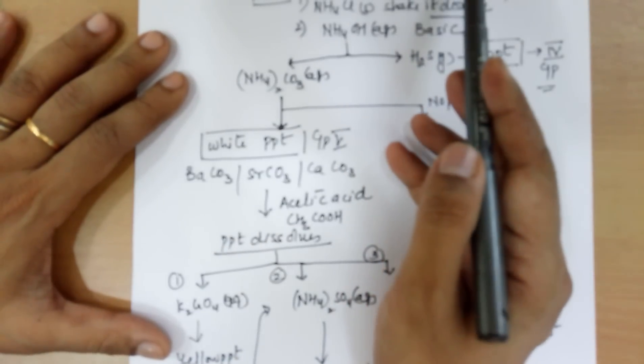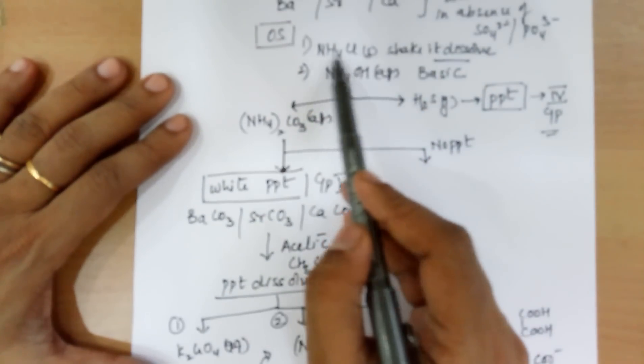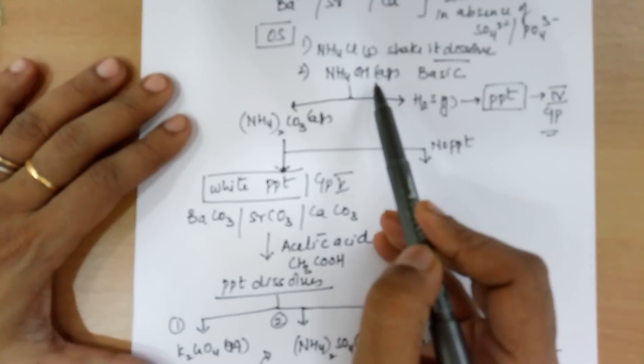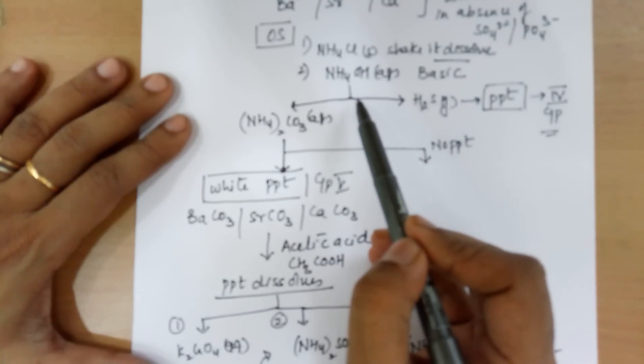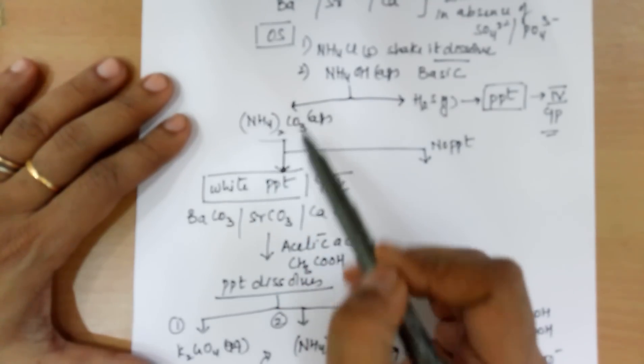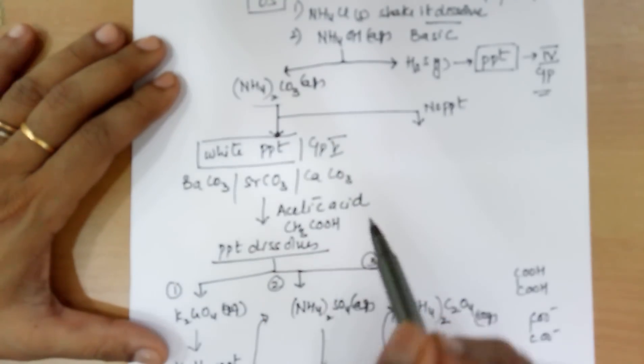While testing for group 5, after addition of ammonium chloride solid, ammonium hydroxide, in case you move ahead to ammonium carbonate, you end up in a PPT. That's group 5.